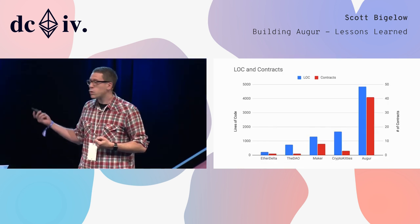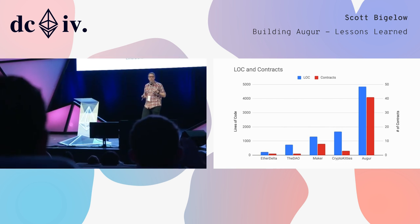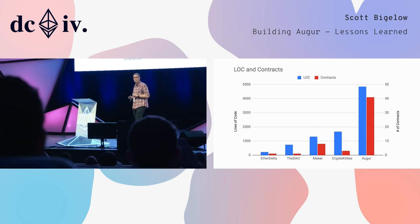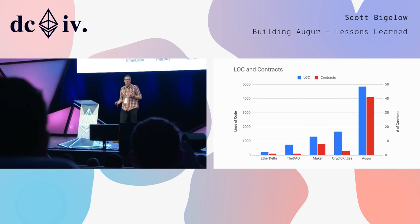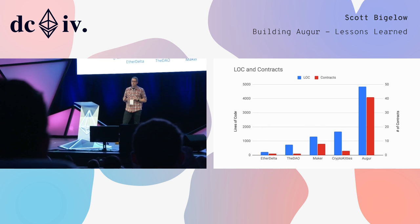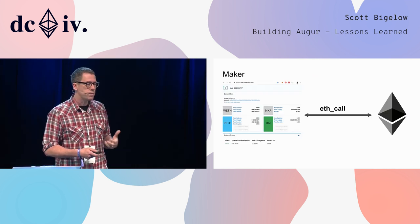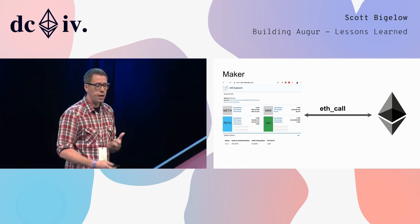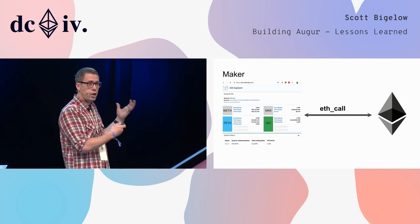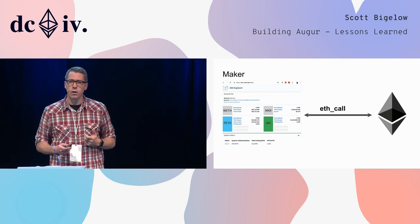To accomplish this took quite a bit of code. Augur is nearly 5,000 lines of Solidity code, and the base deploy is 41 contracts. Architecturally, it's a little different too. If you've used the Maker interface before — this is another dApp which is a series of smart contracts and a UI, a static UI that can make dynamic calls into Ethereum and run an ETH call.